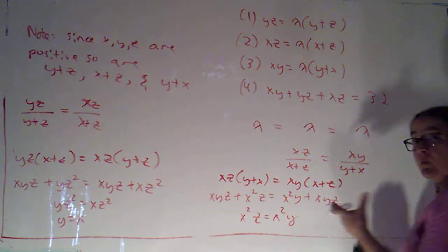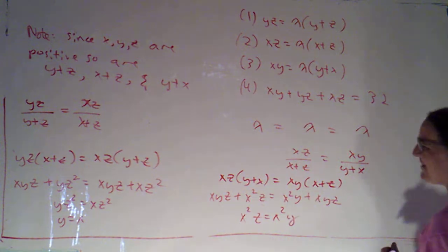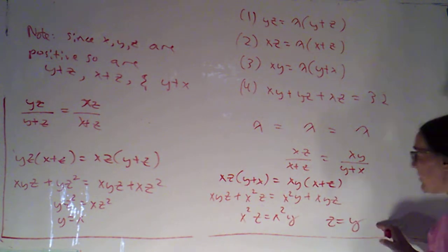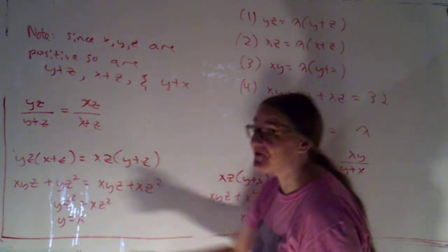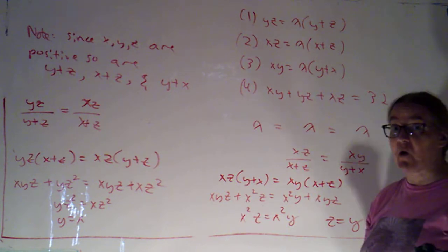But now, again, we're in octant one. x isn't zero, so I can divide by it, so z is equal to y. But we already had that x was equal to y. So what we've got is now x and y and z are all the same.